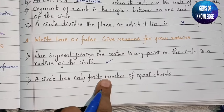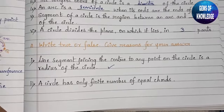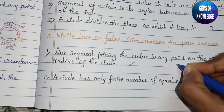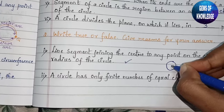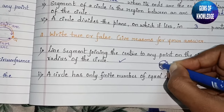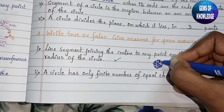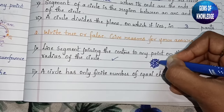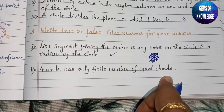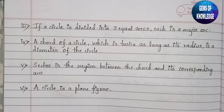Finite means only a countable number of chords. No — a circle has an infinite number of chords. For example, we may have a chord here, a chord here, a chord in this direction, in that direction — there are lots of chords. So the statement that a circle has only a finite number of equal chords is false; a circle may have infinite chords.